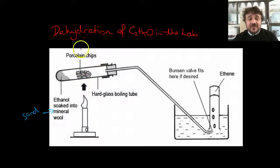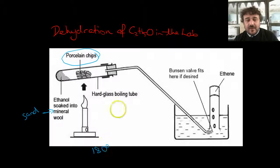We have porcelain chips here, which would have an aluminum oxide in there. And a hard glass boiling tube. You heat it up to about 180 degrees. And ethylene gas will come off. And we'll bubble up ethylene gas and it'll be collected in this area here. It'll displace the water in that tube. That's it. And I'll see you in class.